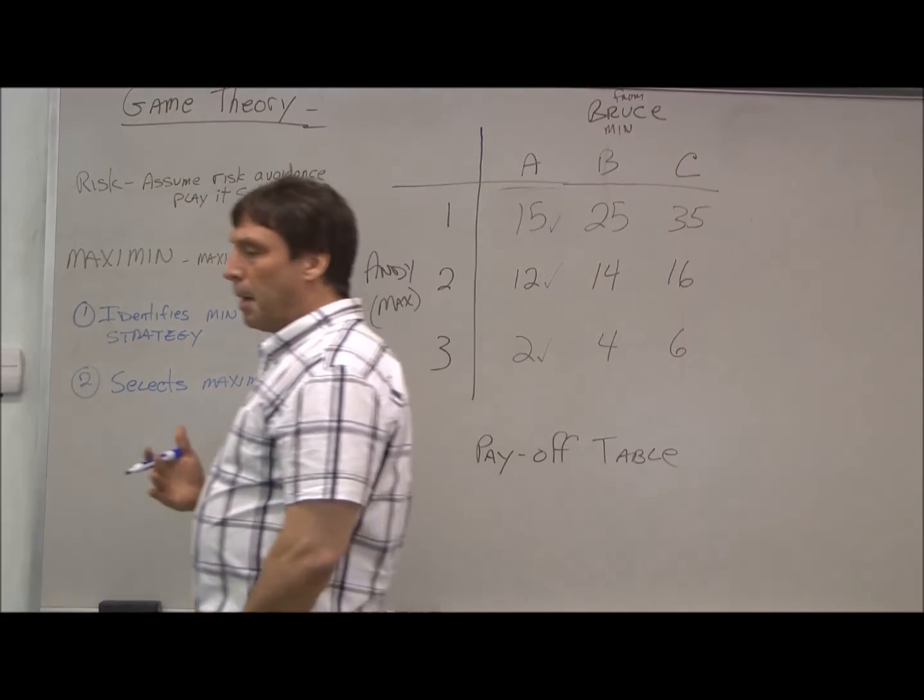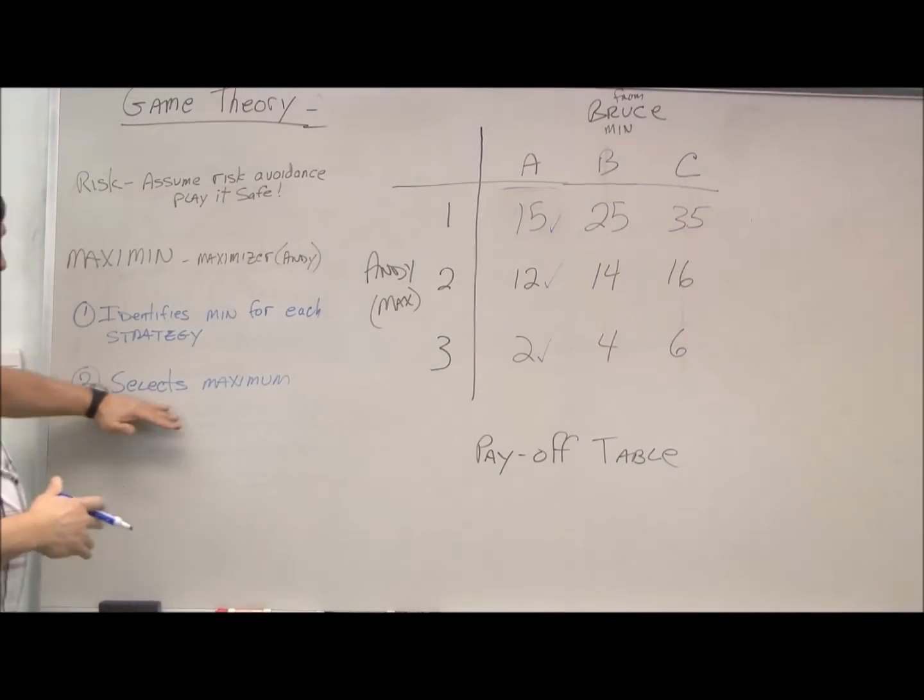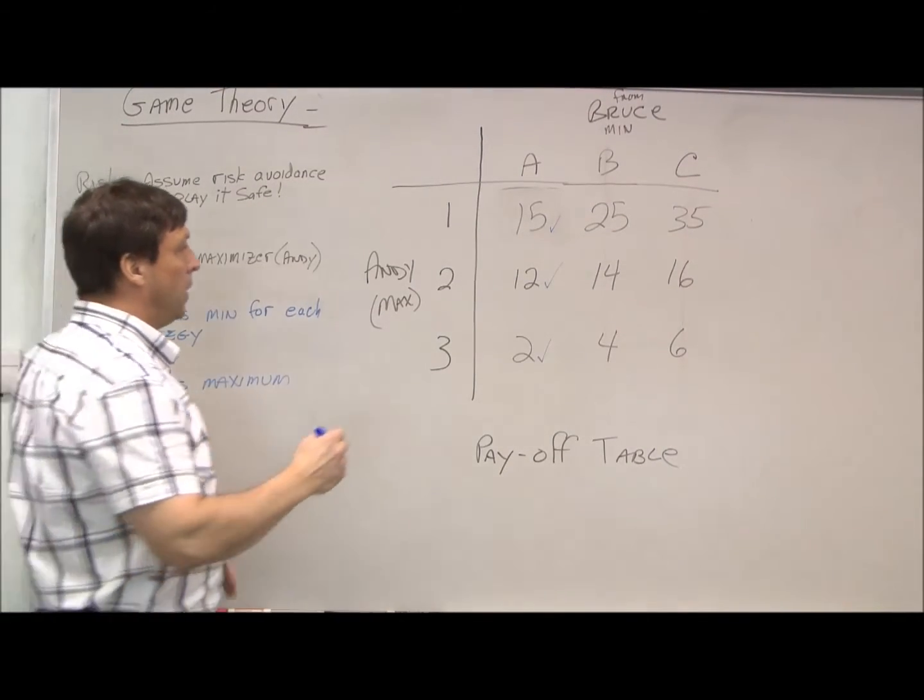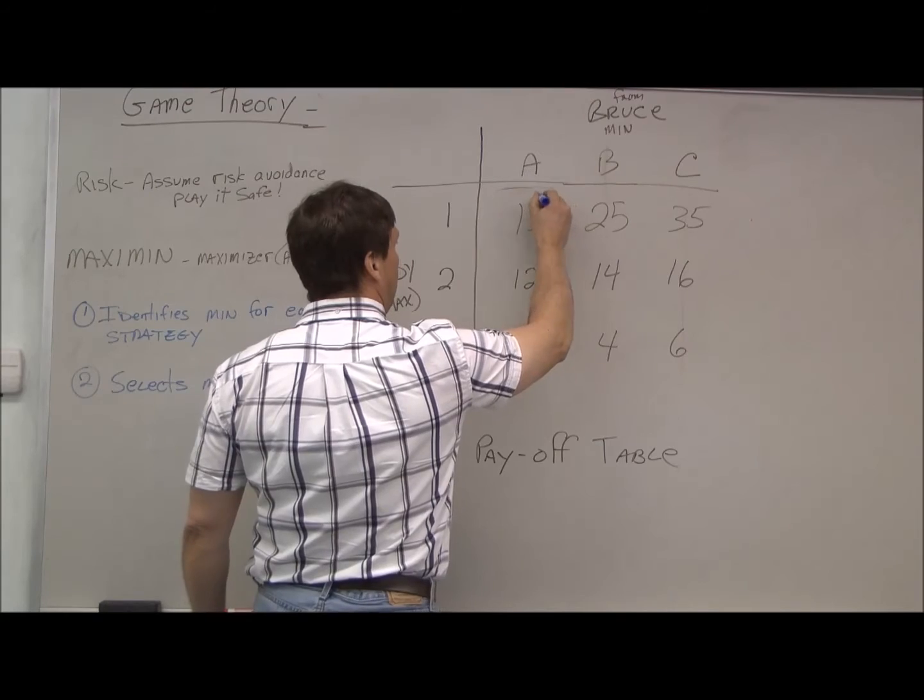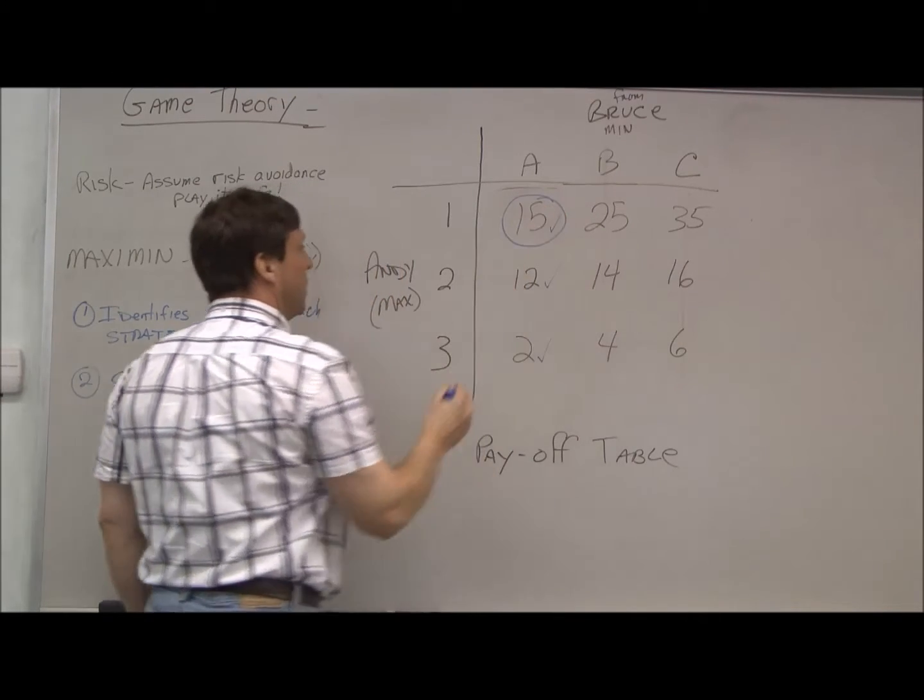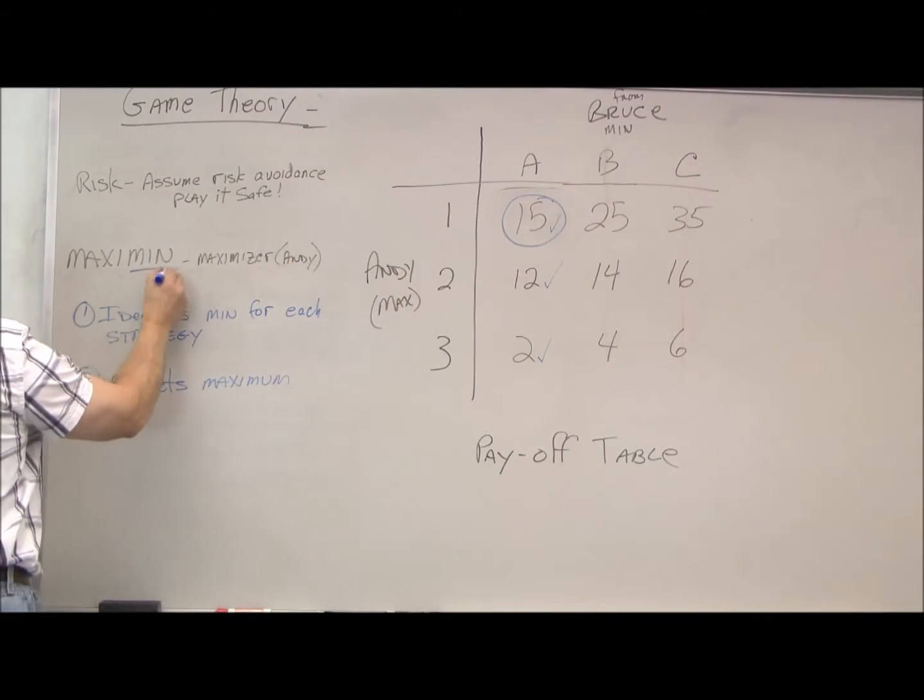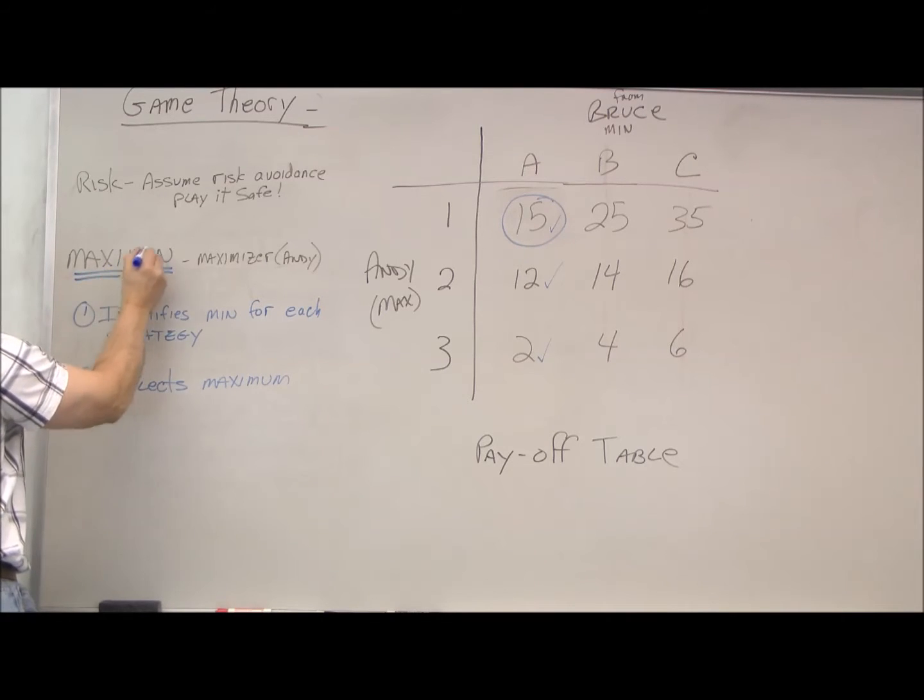So from his minimums, then he's going to select the maximum, which is 15. So what he did for the maxi-min is he selected the minimum and chose the maximum, and that's what we mean by maxi-min.